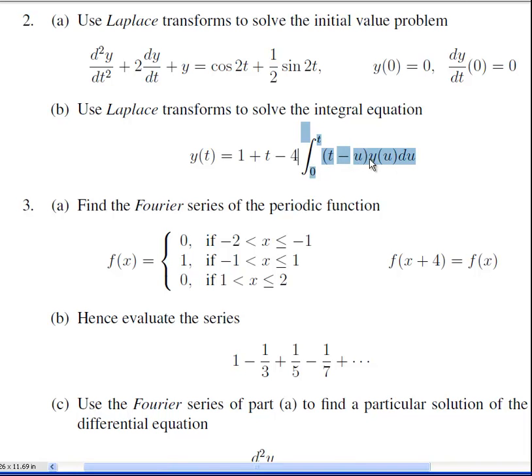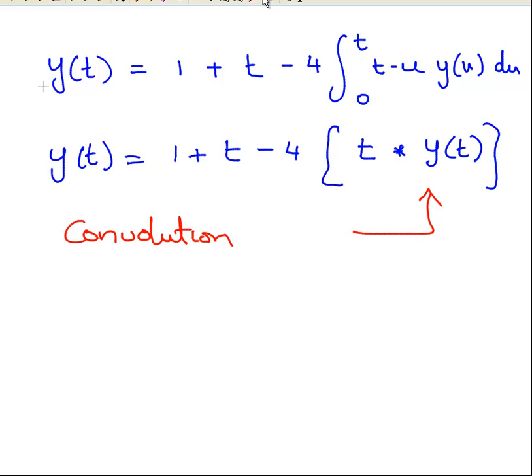Now this is actually what they call a convolution of t and y. So I'll explain this as I go. Essentially it's just what they call a convolution, and it sort of pops up quite a lot in these Laplace Transform questions. So there we have it there. So it is 4 times t, this asterisk symbol, which is not multiplication, it's just convolution, times y of t. Is how we might rewrite that.